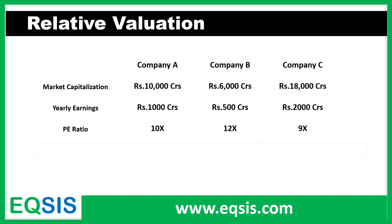The P/E ratio stands for price-to-earnings. Company A is getting 10x as a value for its earnings. Company B is getting 12x because it earns only 500 crores but investors are willing to value the shares at 6,000 crores. Company C is actually undervalued, getting only 9x. So to conclude: Company C is undervalued at 9x, Company A is fairly valued at 10x, and Company B is overvalued at 12x. Lower the P/E ratio, more attractive it becomes.